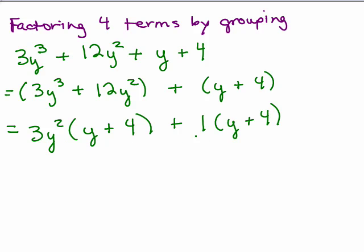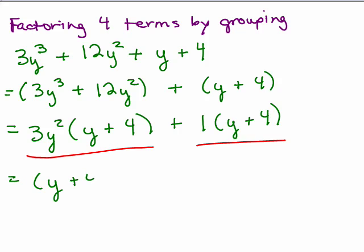We've got two big terms here. We have this whole term plus this whole term. Each of the terms has a common factor that we can pull out — y plus 4 — so we can pull out a (y + 4), leaving (3y² + 1), and that's our answer.